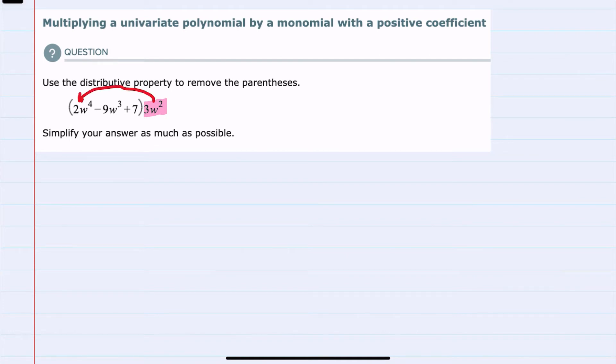Starting first with 3w times 2w to the 4th, the coefficients 3 and 2 multiply to give me 6. Then for the w's, w to the 2 times w to the 4, the rule is when you multiply with the same base variable, you add the exponents. So we keep the variable w and add the 4 and the 2, and that gives us 6.